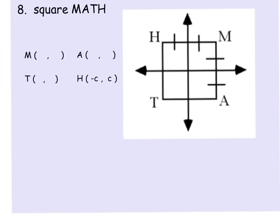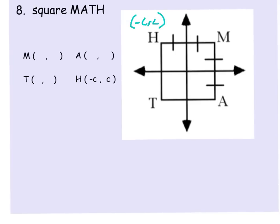Here we have square MATH, and this time they tell us the ordered pair for H, and it is (-c,c). Well, what that means is from (0,0), when we go out to here, it is a distance of c, and when we go up from here to here, it is a distance of c. So if you use that to kind of help you figure out these other ordered pairs...